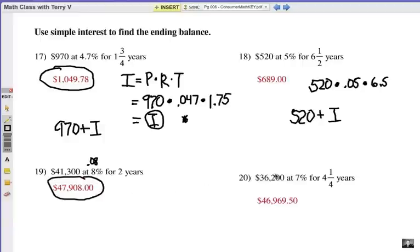Number 20. Here's your principal. Here's your rate. And 4 and a quarter years. What's that? 4.25. So multiply those three together. That will be the interest. Then you add it on to that principal.